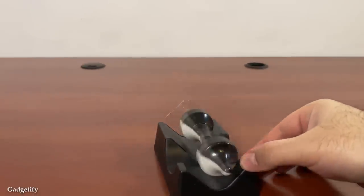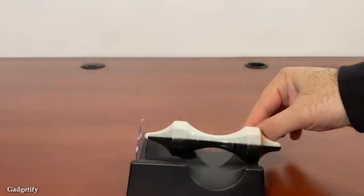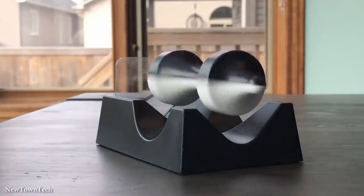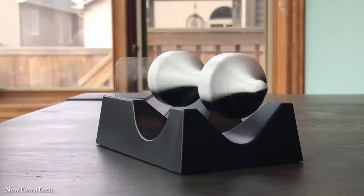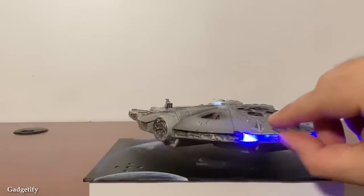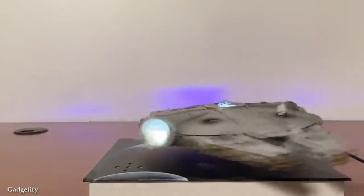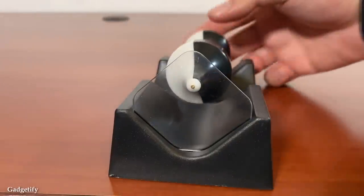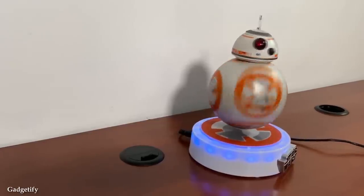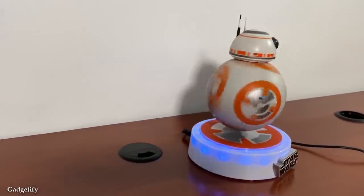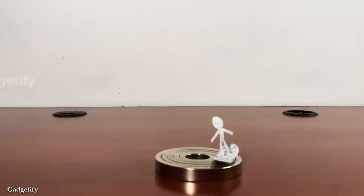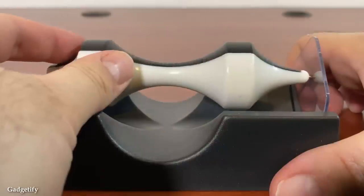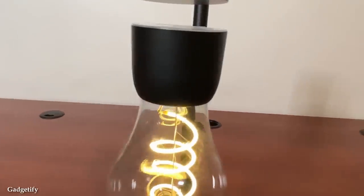These desk toys come in various forms, including floating globes, levitating pens, and even levitating plant holders. Each design adds its own unique charm to the workspace, allowing individuals to personalize their desk and create an environment that sparks joy and creativity. In addition to that aesthetic and educational value, these toys can also help reduce stress and promote mindfulness. Watching these objects float and rotate around creates a soothing and calming effect, helping to alleviate tension and anxiety. Furthermore, these toys can serve as a conversation starter and icebreaker in an office setting. Colleagues and visitors are often intrigued by these floating objects, sparking discussions about science, technology, and the wonders of magnetism. They foster a sense of curiosity and connection among co-workers, and can even inspire collaborative thinking and problem-solving.